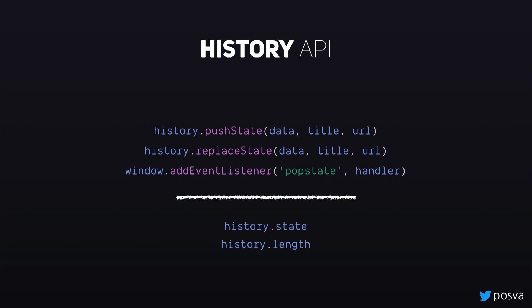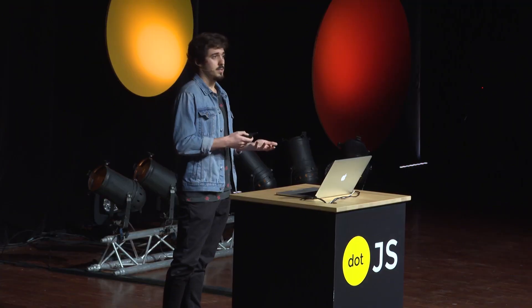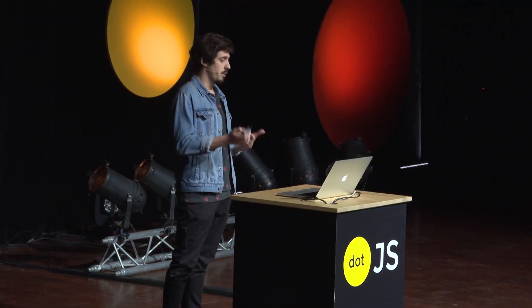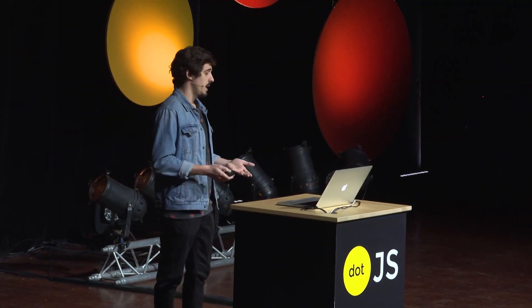The first argument is the data, which is going to be reflected on the history state right after. The title is a string, but it's ignored — like web components, we all know it's there, but we don't use it. And then you have the URL, which is what you want to see on the address bar.